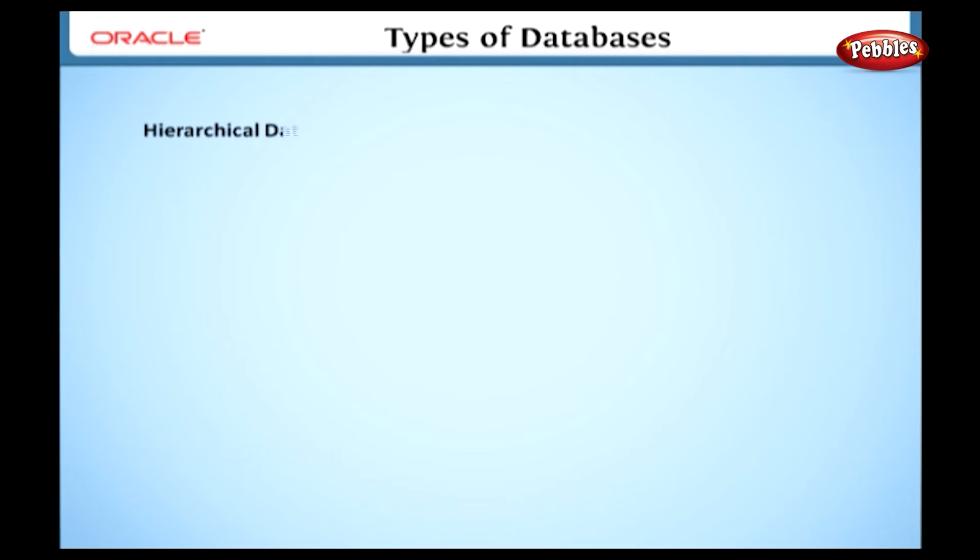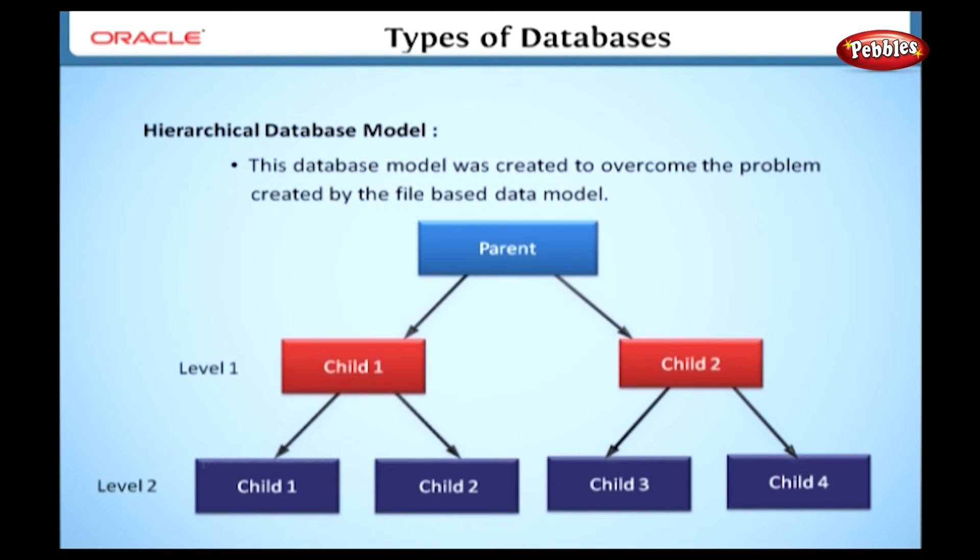The next type is the hierarchical database model. This database model was created to overcome the problem created by the file-based data model. In this model, a series of databases are grouped together to assemble a family tree.